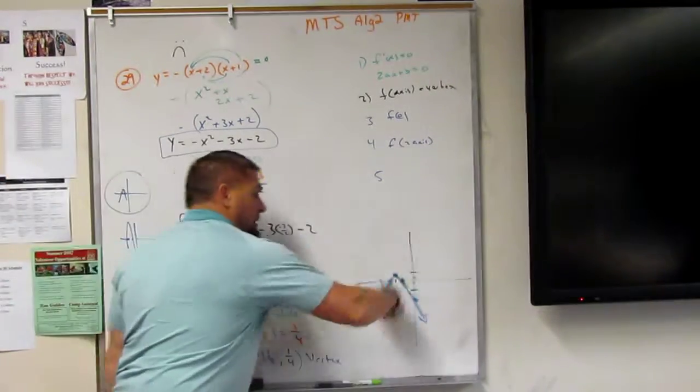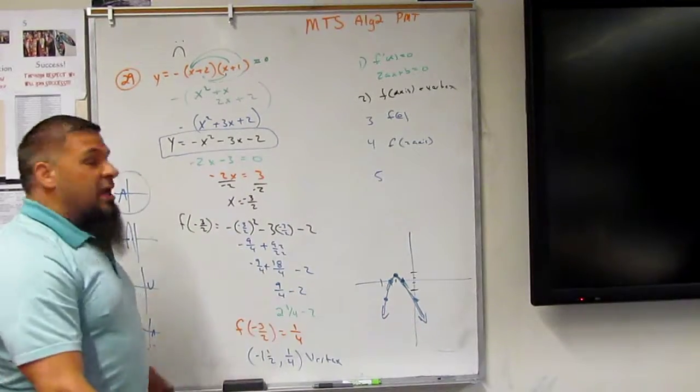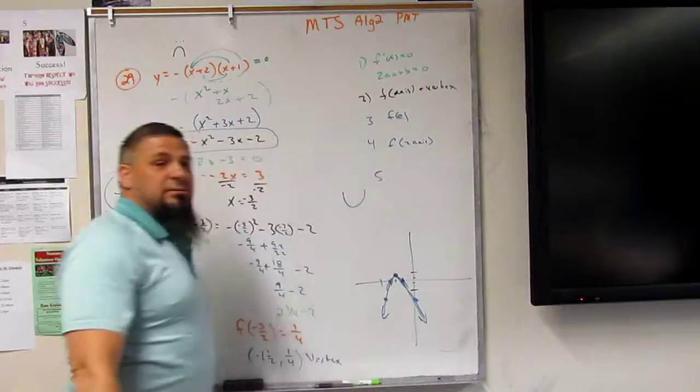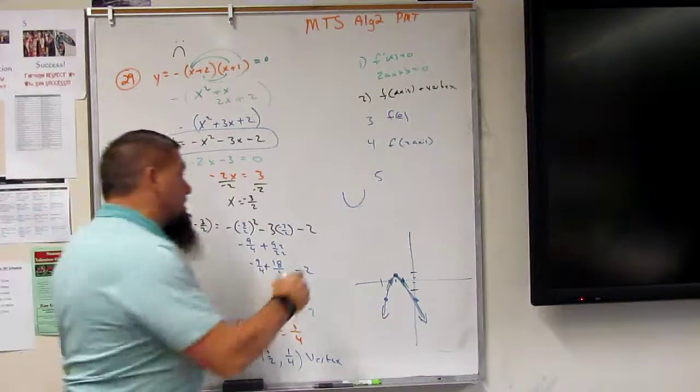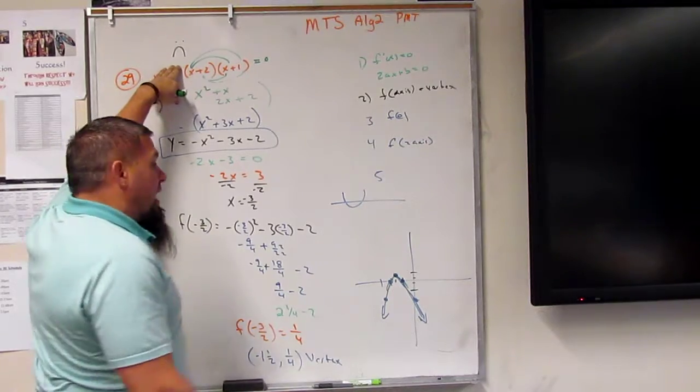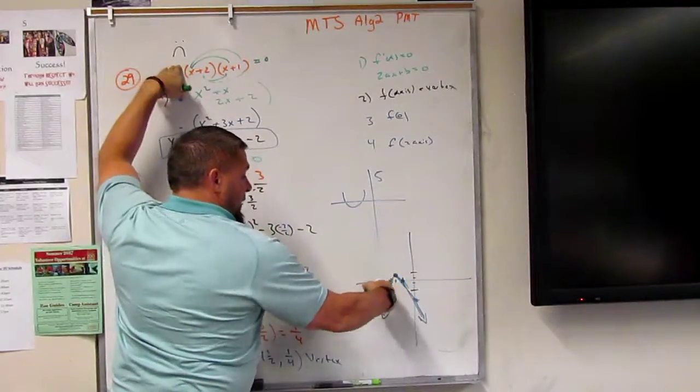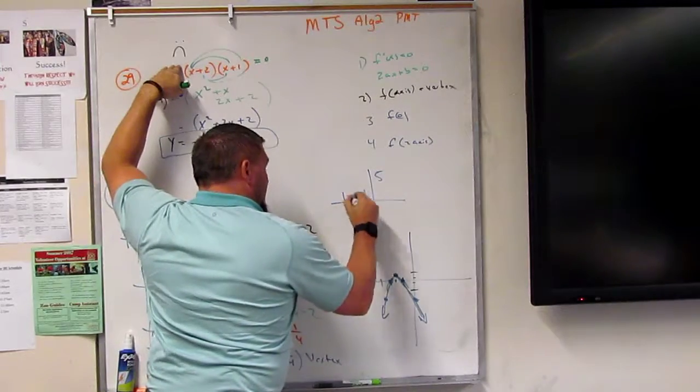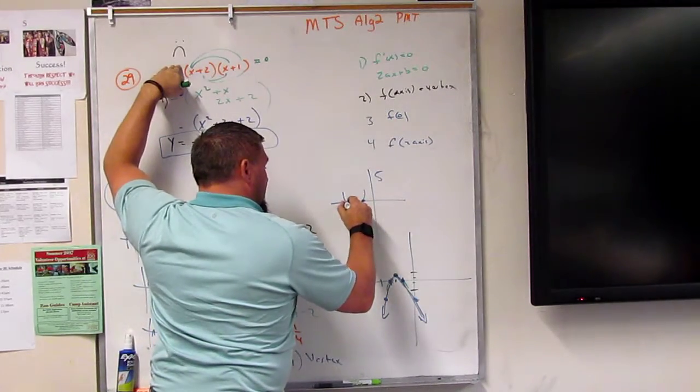And then you know it's frowning, so it has to go up over it. If there's two x's, right, then it has to go up over it if it's frowning. If this is positive, then you know it's smiling, it's going to look like that through those same two points. So if this were positive, right, it'd be going through those same two points, but like that. See what I'm saying?